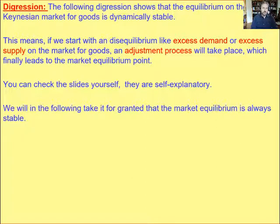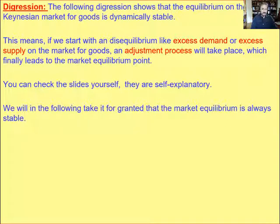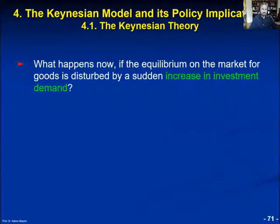The following digression shows that the equilibrium on the Keynesian market for goods is also dynamically stable. This means that if we start with a disequilibrium, like excess demand or excess supply on the market for goods, an adjustment process will take place which finally leads to the market equilibrium point. You can check the slides yourself — they are self-explanatory. We will in the following take it for granted that the market equilibrium is always dynamically stable. In the next lesson, we will analyze what happens if the market equilibrium is disturbed by a sudden increase in investment demand.